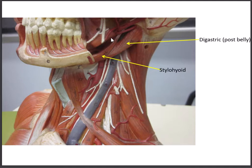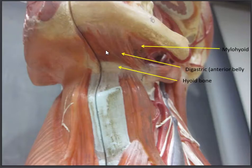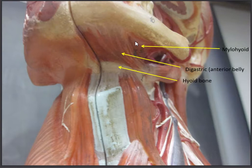The next muscle attaches to the styloid process — that little stick that sticks down from the temporal bone — and then goes to the hyoid bone. This is the stylohyoid muscle. The third muscle forms the floor of our mouth: a broad muscle that goes across forming the floor of the mouth — this is the mylohyoid. There's one other muscle, the geniohyoid, which we can't see on these models unless we cut them apart. The mylohyoid forms the floor of the mouth.